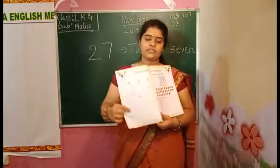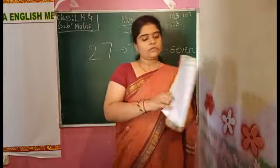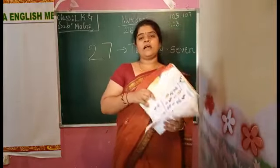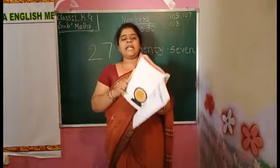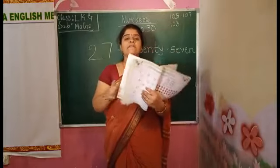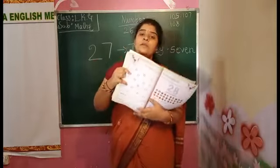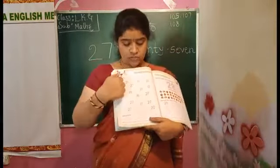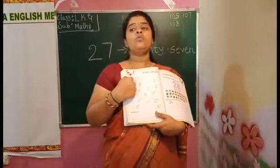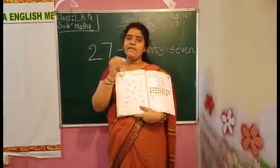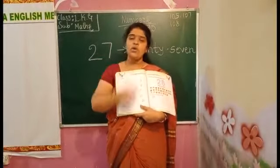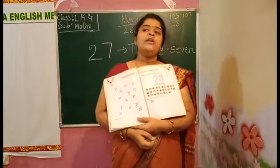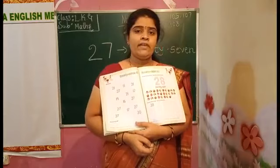Let's turn the page. Here they are given a box with few numbers. In these boxes, you have to find the number 27 and circle it.